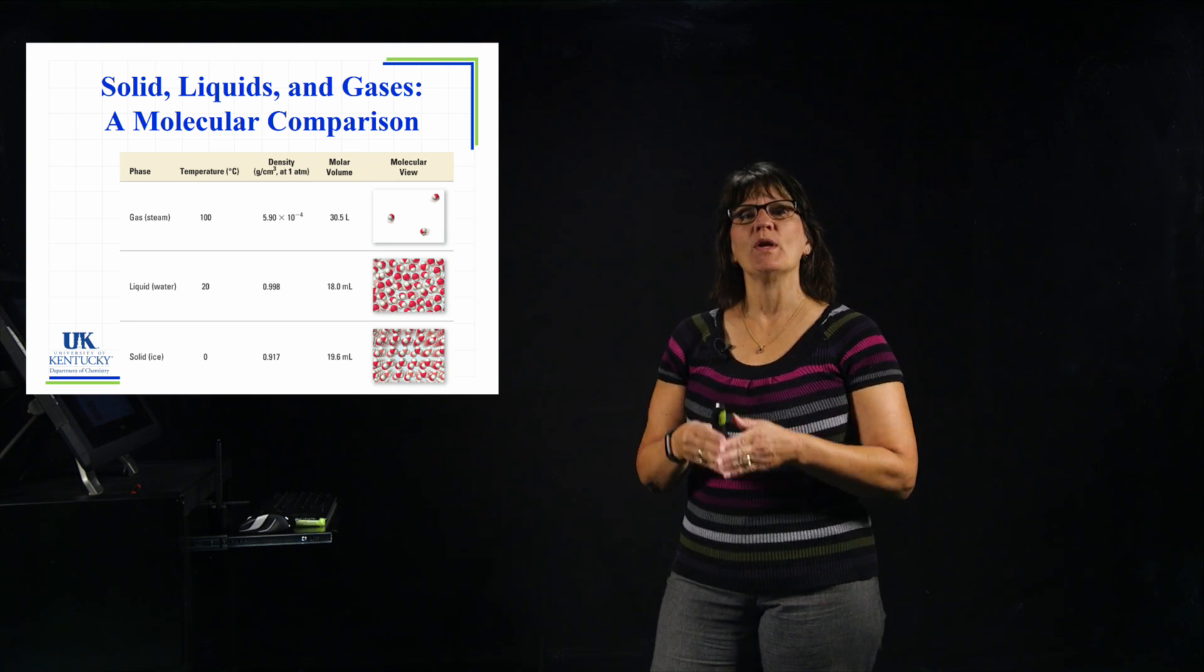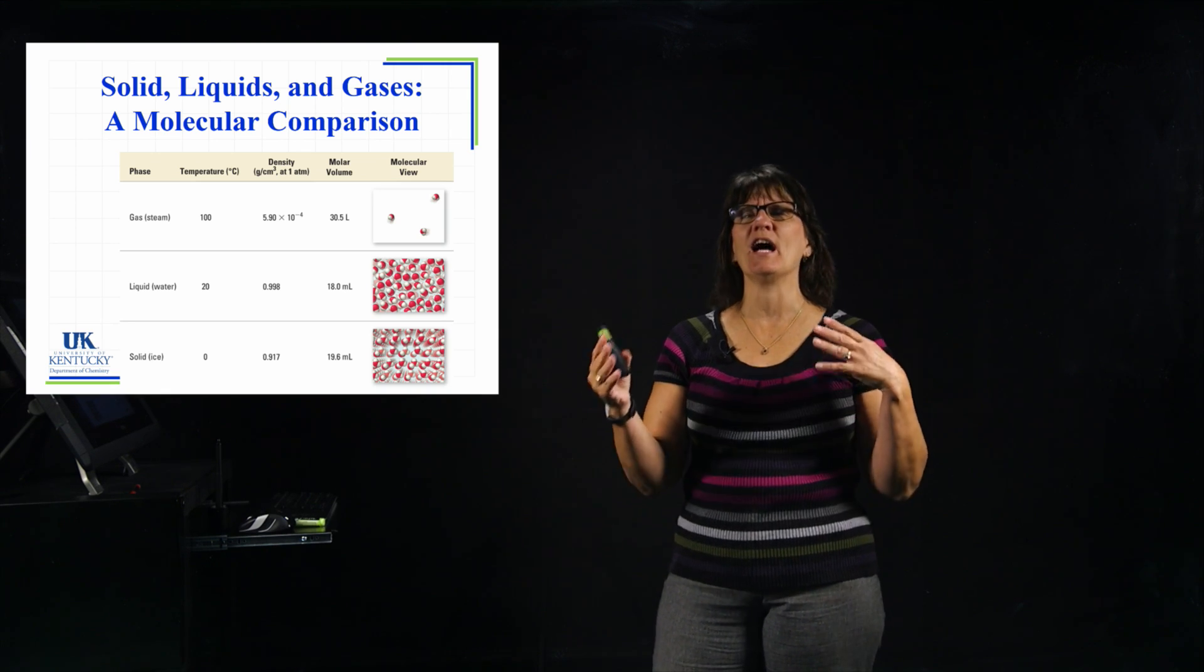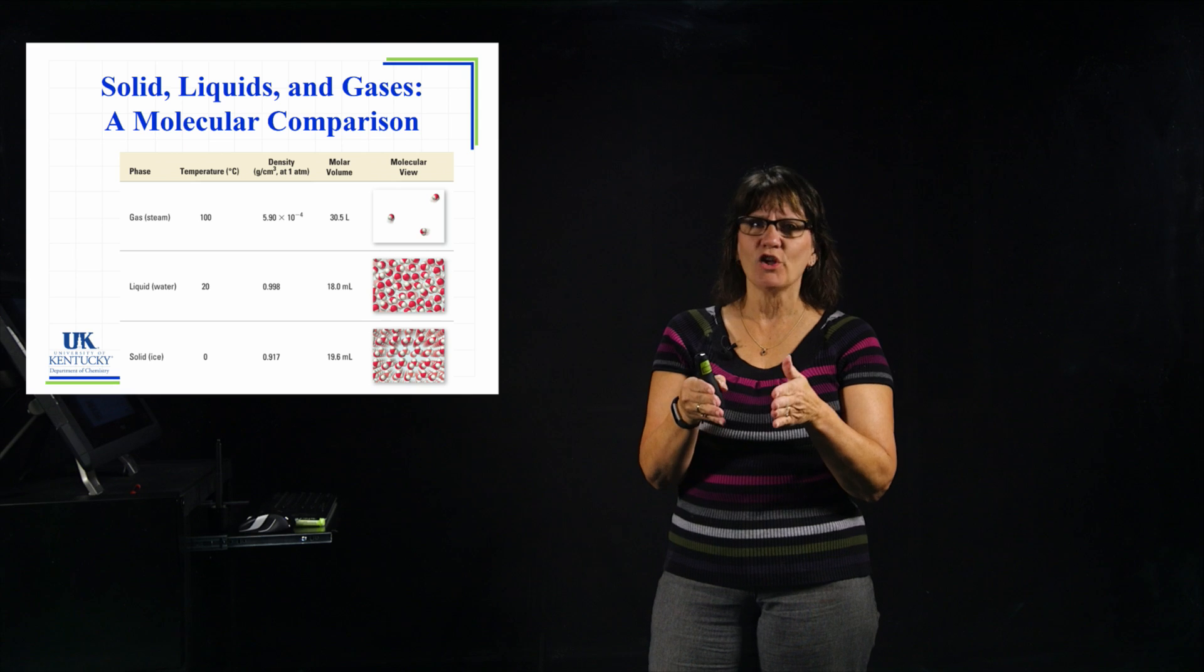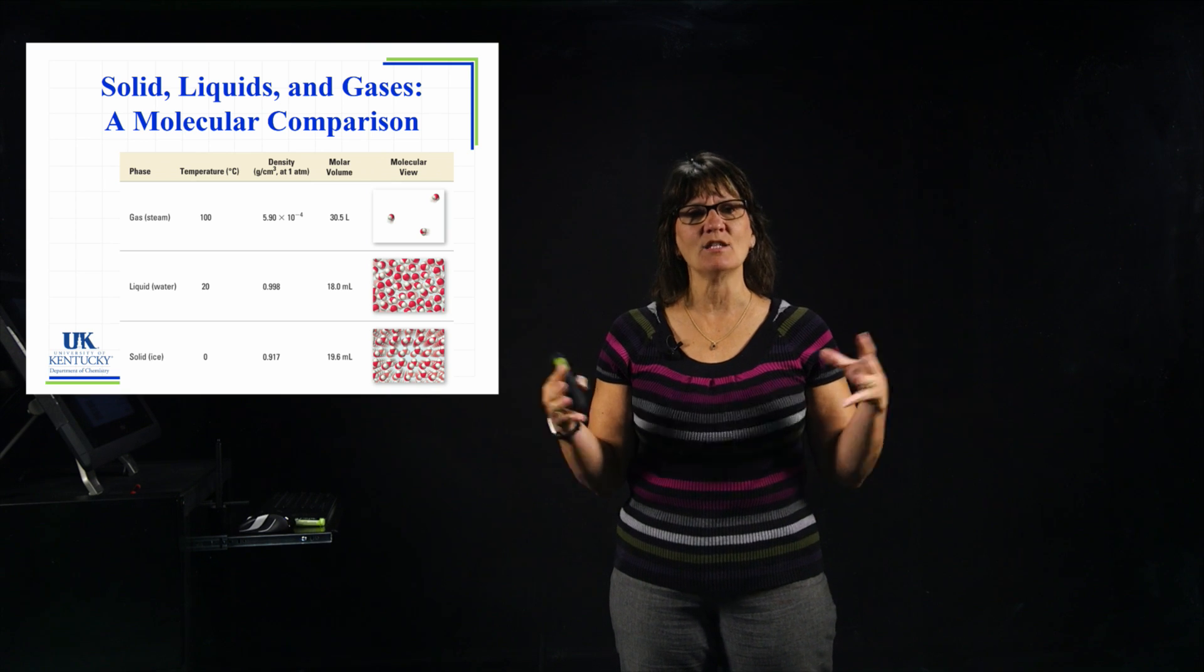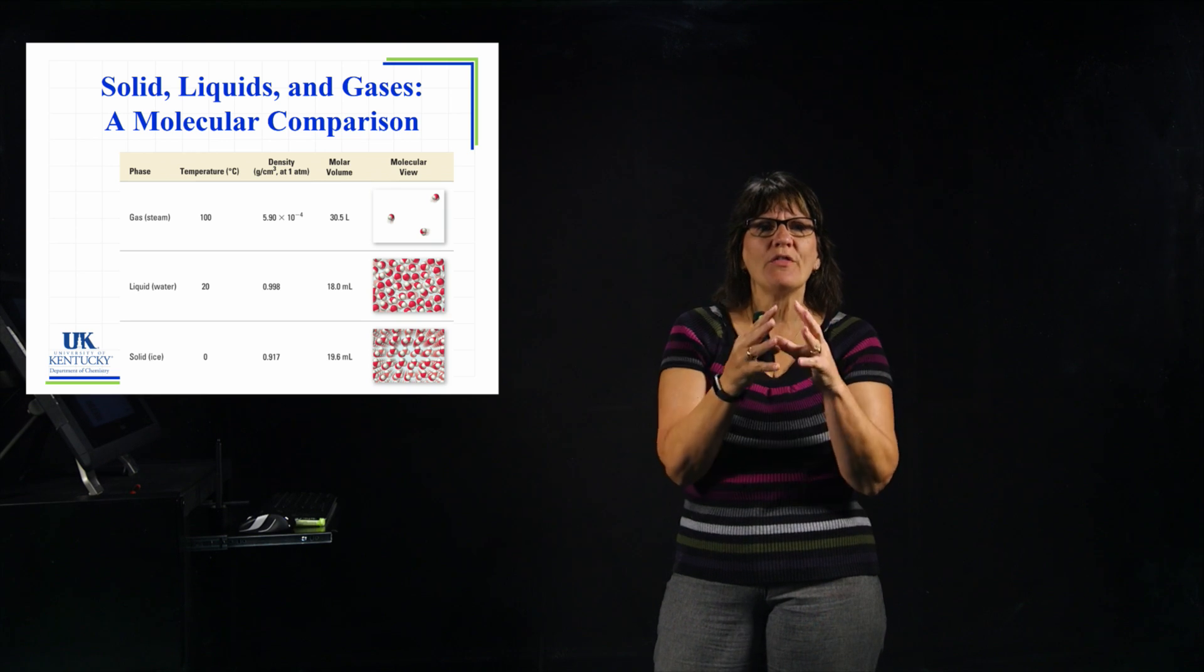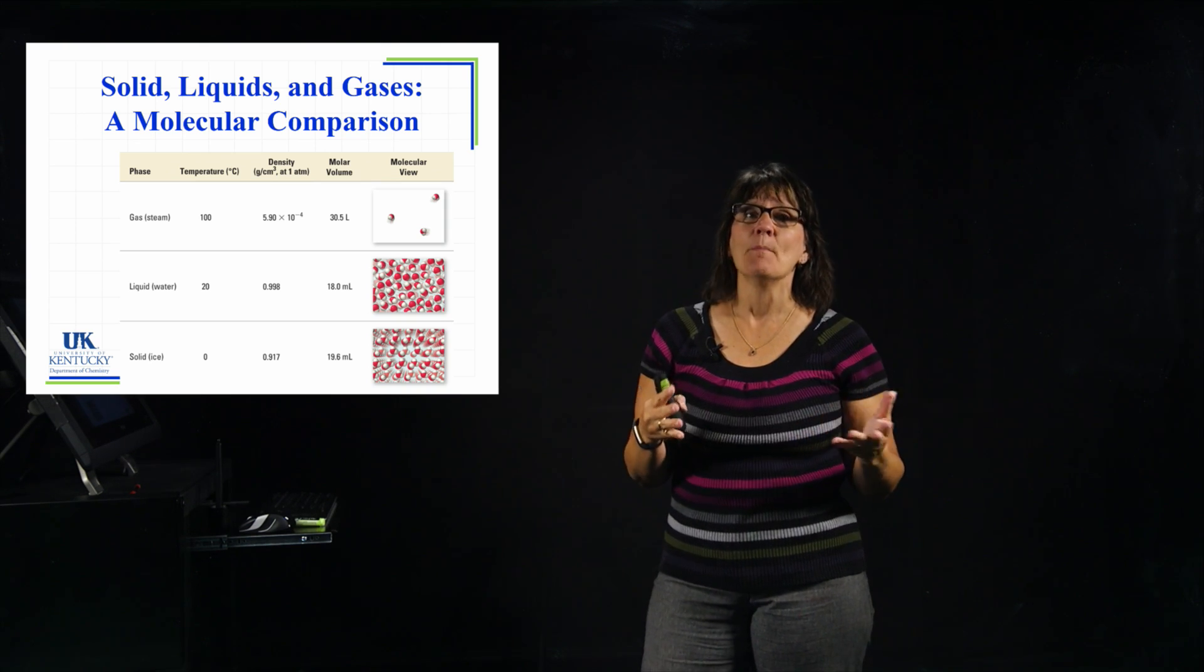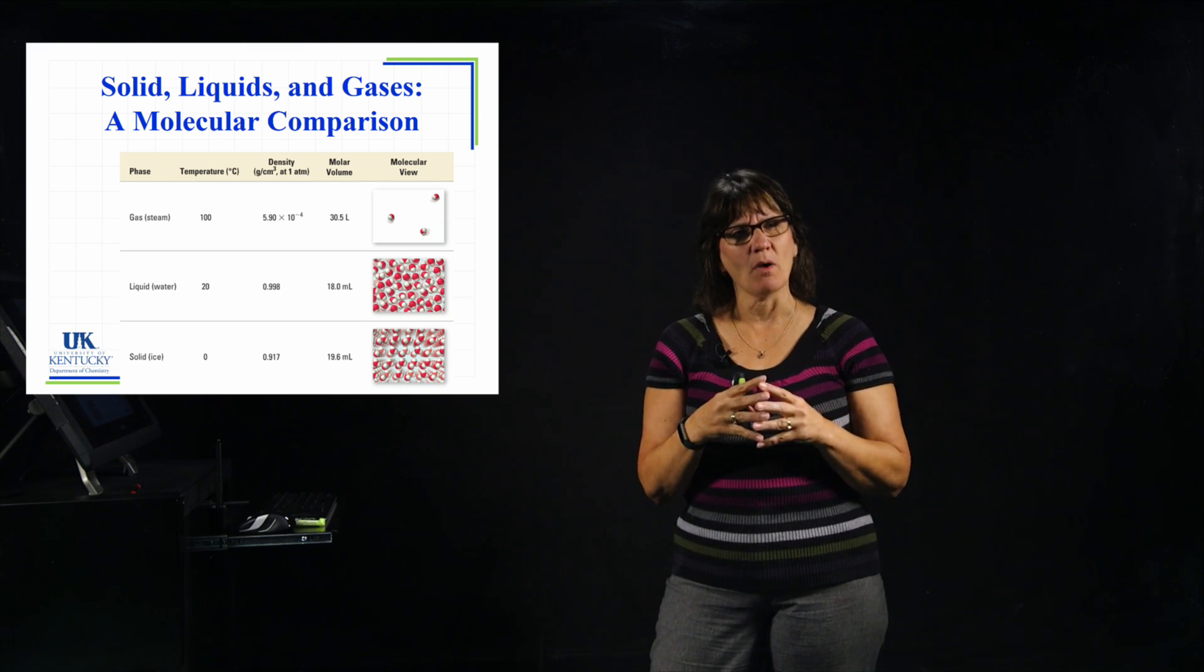So we know what a solid is, a liquid is, and a gas is. Solids have a defined shape and a defined volume. Liquids have a defined volume but not shape, they can take on the shape of their container. And gases expand to fill whatever size or shape container it's in. So we know that on the macroscopic level, on the level that we can see, we define those three states. But let's look at the molecular level and start looking at what's happening with the molecules.